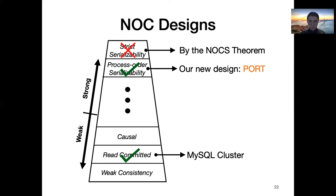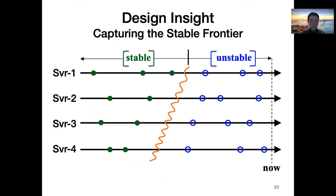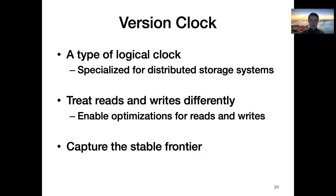Process-ordered serializability is slightly weaker than strict serializability. It also requires a total order but does not have the real-time order requirement. It is equivalent to sequential consistency with transactional isolation. The design insight of PORT is to make read-only transactions read at a stable frontier whenever possible. The stable frontier is the most recent snapshot in the stable region a client is aware of. Reading at a stable frontier is coordination-free and thus optimal performance is possible. Central to PORT is a type of logical clock specialized for distributed storage systems called version clocks, which enable performance-optimal read-only transactions by capturing the stable frontier.